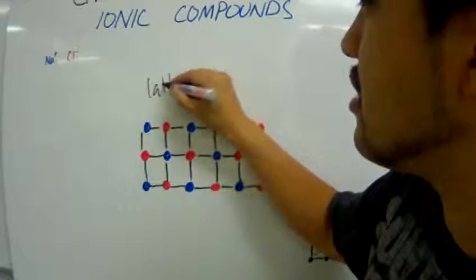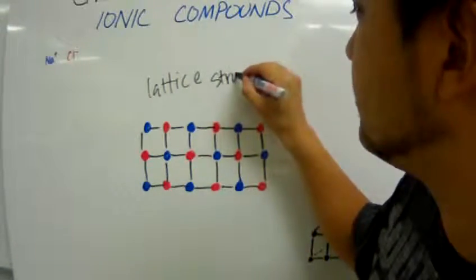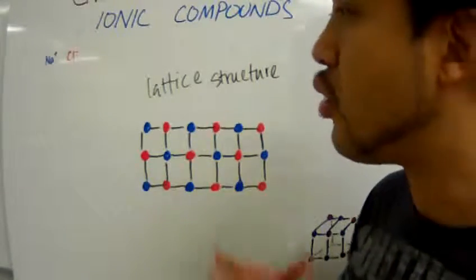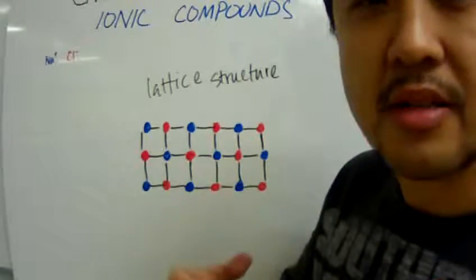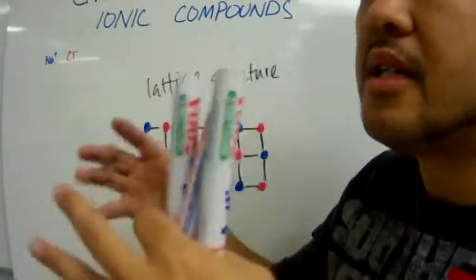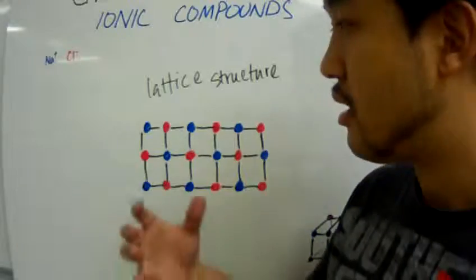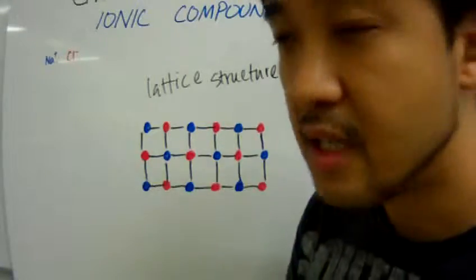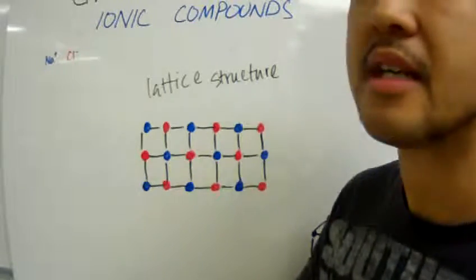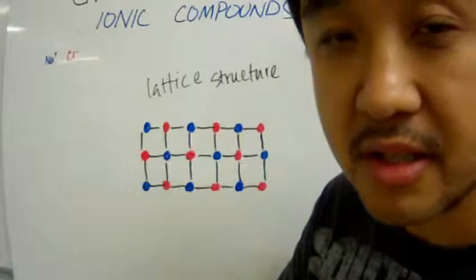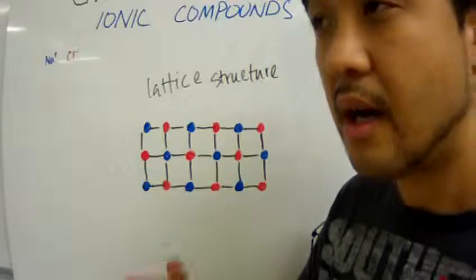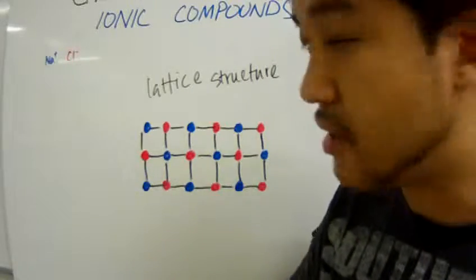A lattice structure. What is a lattice structure? A lattice structure is when you have ionic bonds of cations and anions coming together in a very neat and orderly fashion. In your syllabus, it is defined as repeating units of alternating positive and negative ions.